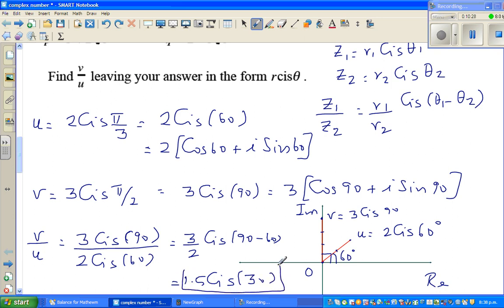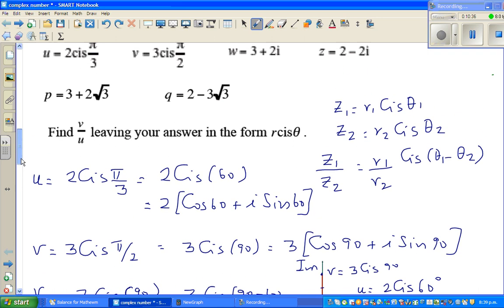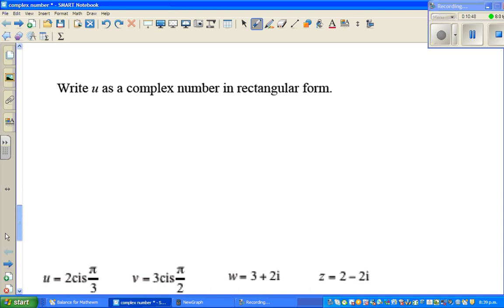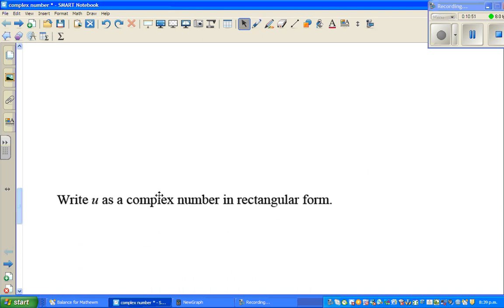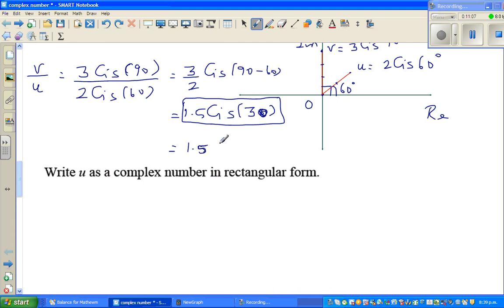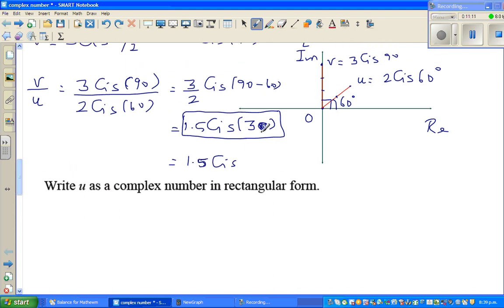Now if you want to check your answer, suppose in the exam you don't remember this formula, this is a very neat elegant formula. You can change this into this form and also do by multiplying by the conjugate. It's a very lengthy process, I'm not going into that. So here, write U as a complex number in the rectangular form. We want to change this. This is 1.5 cis pi by 6, because the question was in radians. 30 is pi by 6, and 180 divided by 6 is 30. So this is your answer.